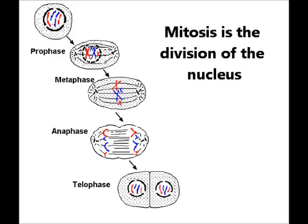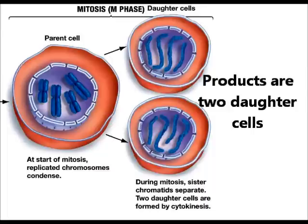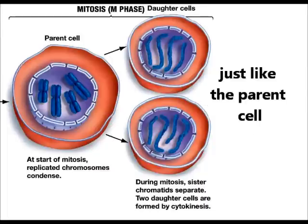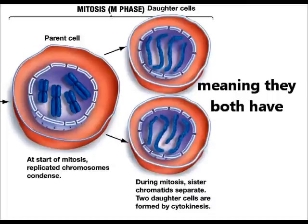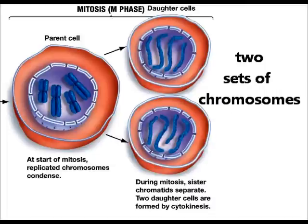Mitosis is the division of the nucleus. Products are two daughter cells, just like the parent cell, which are diploid meaning they both have two sets of chromosomes.